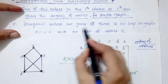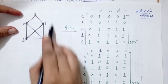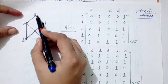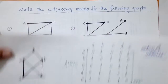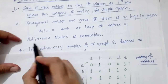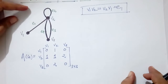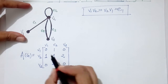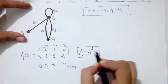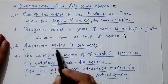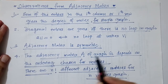The second observation: diagonal entries are zeros if and only if there is no loop. In this graph there is no loop, so there is no edge from vertex a to a or b to b — hence all diagonal entries are zero. Third observation: the adjacency matrix is symmetric. We can verify that for this matrix, A equals A-transpose, confirming it is symmetric for an undirected graph.